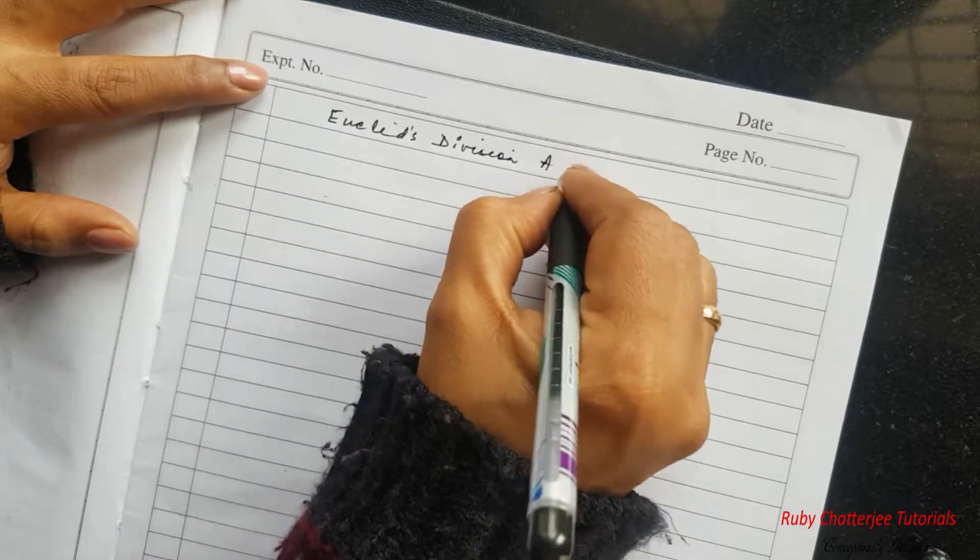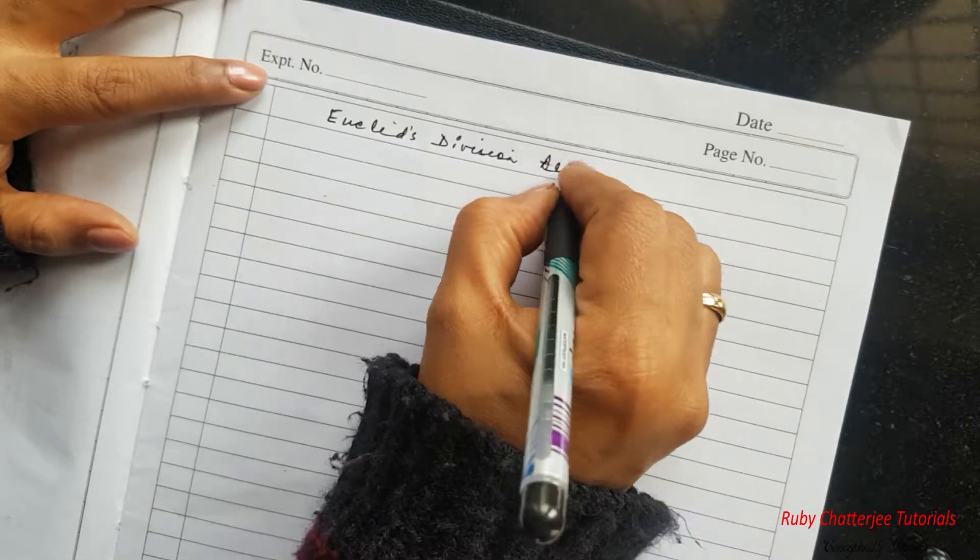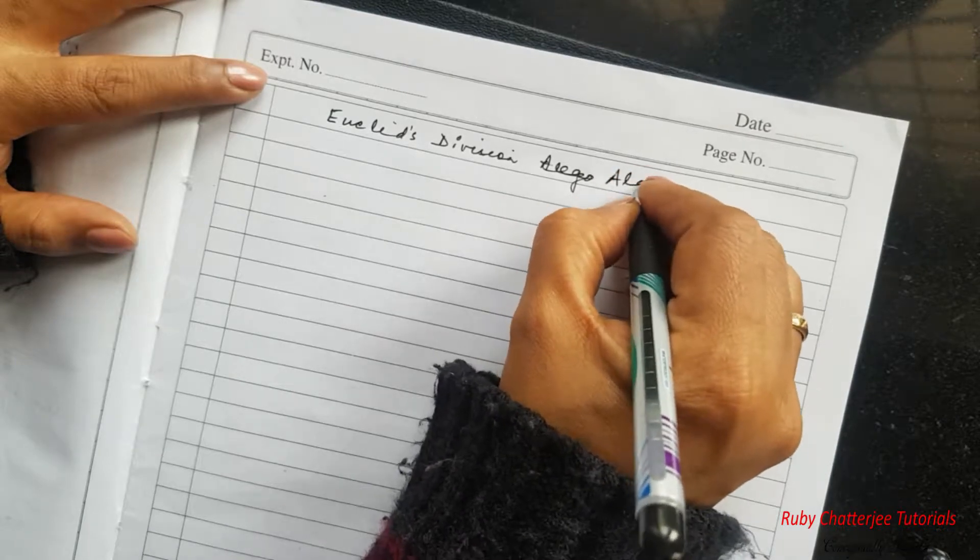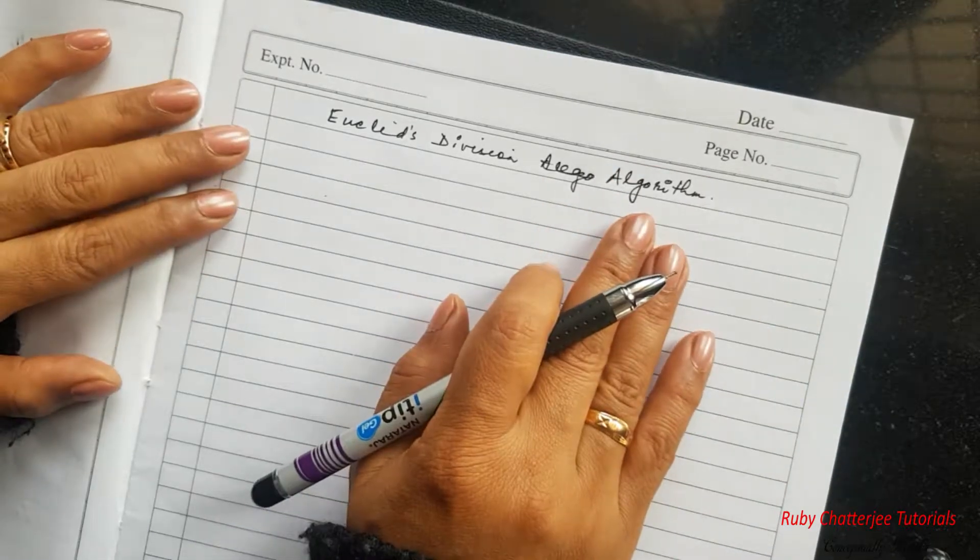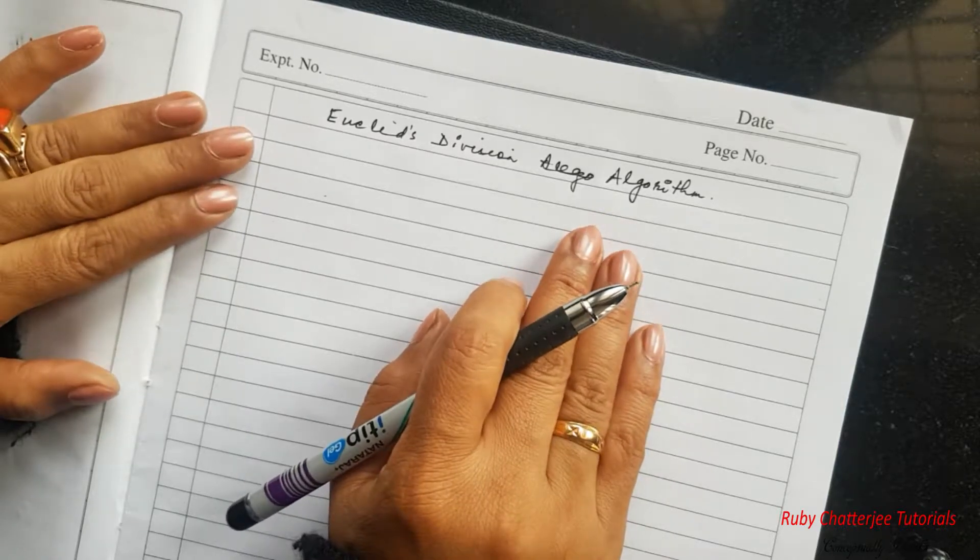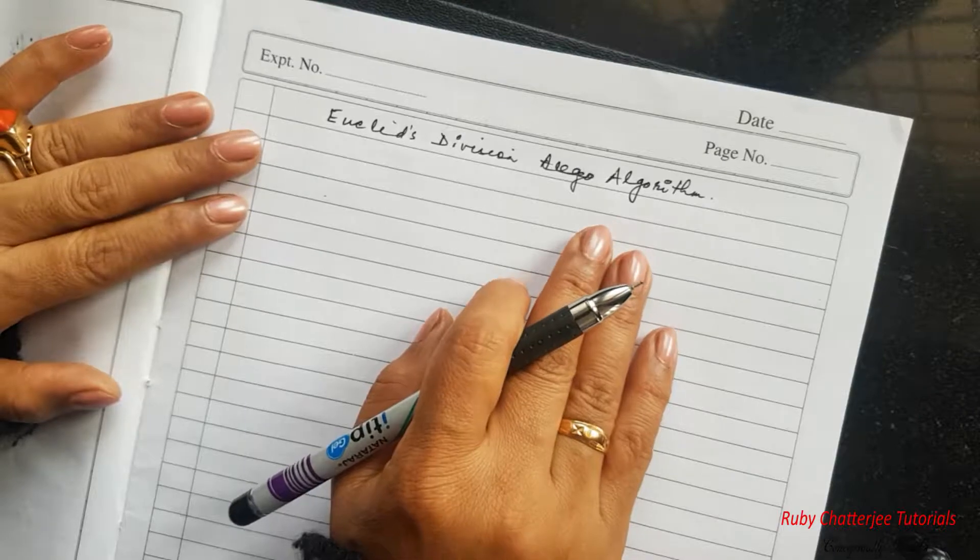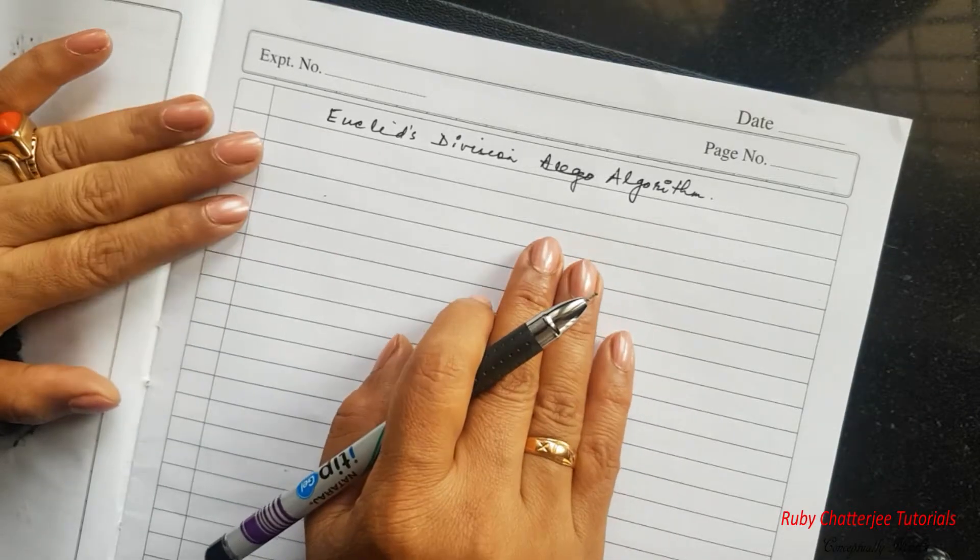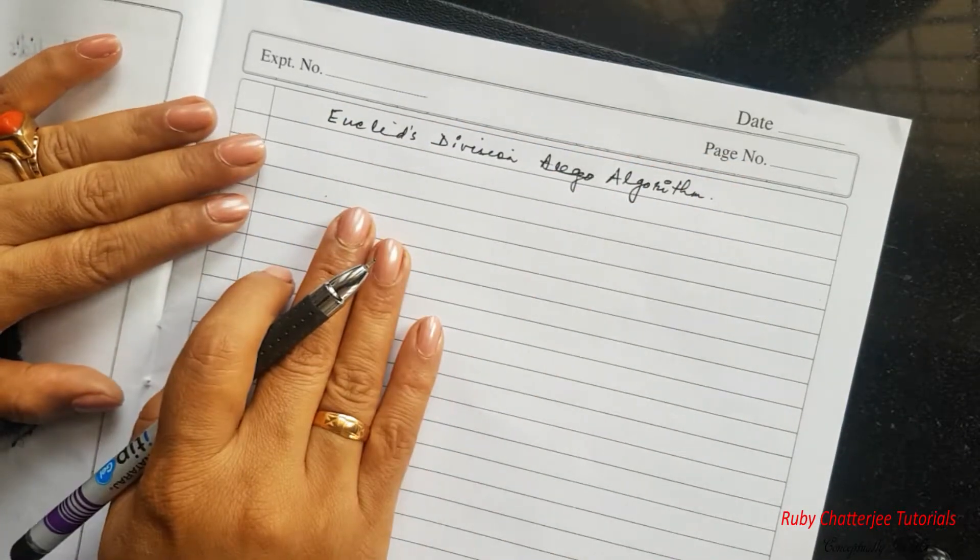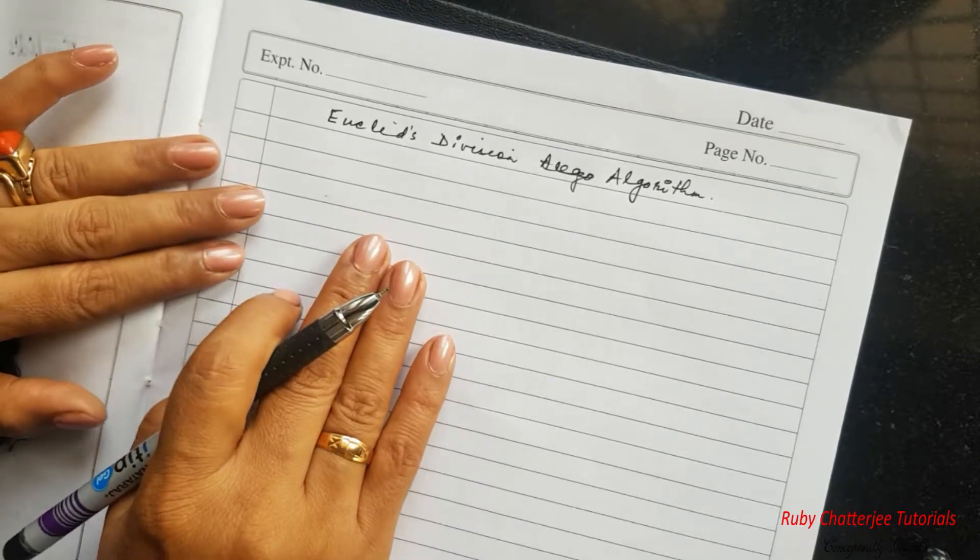Euclid's division algorithm is a set of steps which is used to compute the HCF of two given positive integers. Now before we come to the generalization of this concept we will again take up some specific examples with numbers.